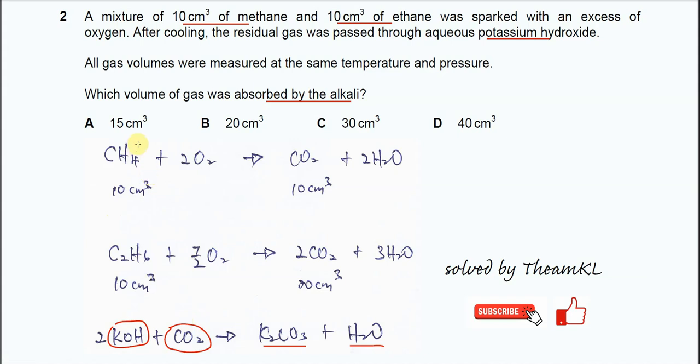It's given 10 cm³ of methane. So it's better to construct two equations: first is the combustion of methane, another one is combustion of ethane.